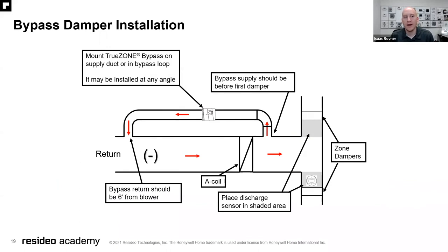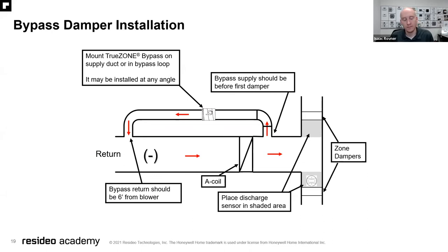Where do we install the bypass damper? We should mount the true zone bypass on the supply duct or in a bypass loop. It can be installed conveniently at any angle. The most important thing is that the bypass supply should be before the first damper, and the return should be six inches below the blower. You can also see here where we typically place the discharge air sensor, which is shown in the bottom right — good for reference as well.